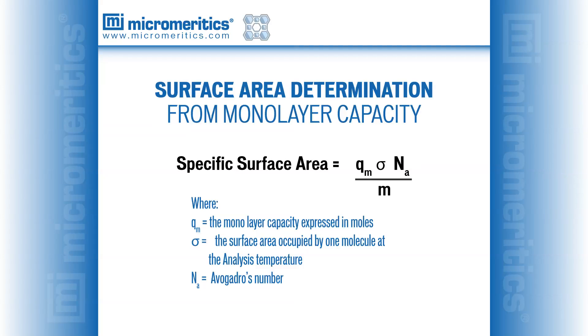This number is multiplied by the area occupied by each molecule. In the case of nitrogen at liquid nitrogen temperature, this area is 0.162 nm squared per molecule. To determine the specific surface area, the total surface area is divided by the mass of the sample used in the test.